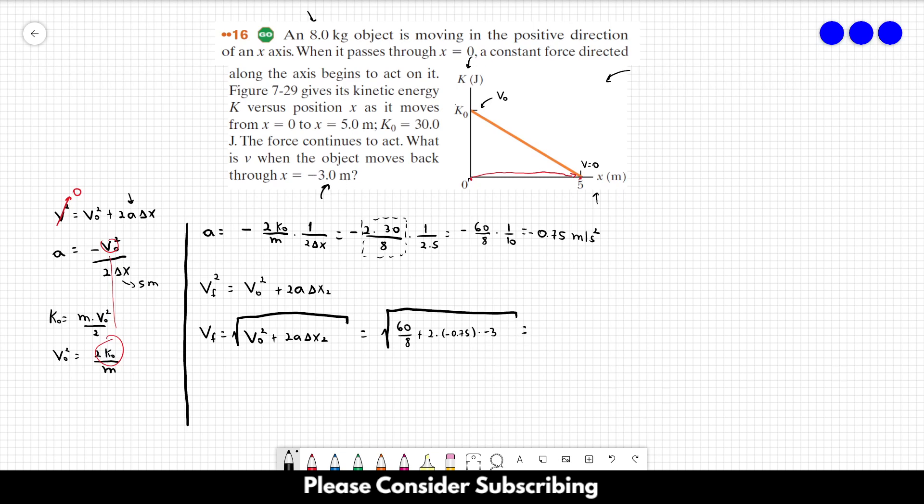So if you do this calculation, you would find the square root of 12, which is equal to roughly 3.5 meters per second. So this is the final speed of the object.